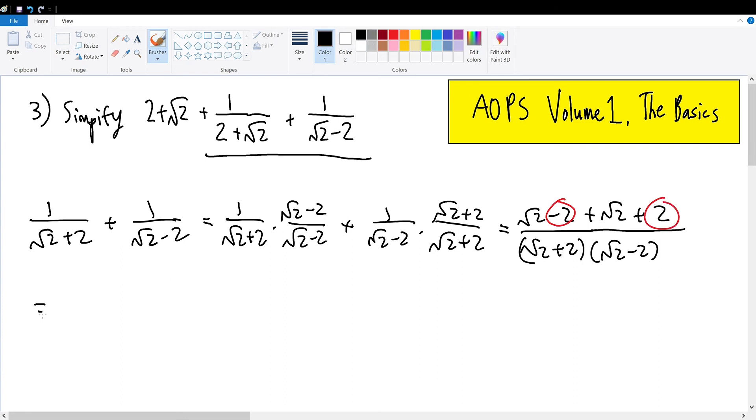The numerator equals 2√2 over this mess, but we can simplify that by applying the equation (a + b)(a - b) which is equal to a² - b².